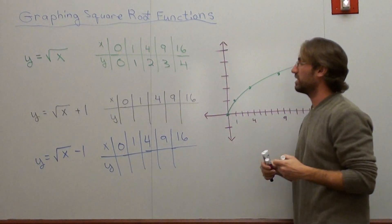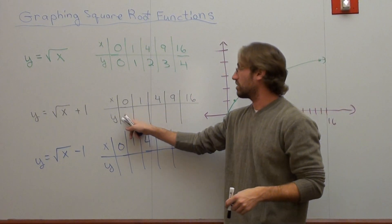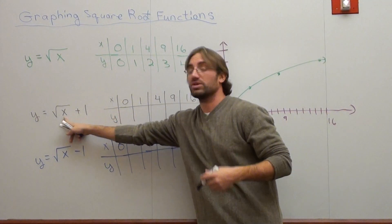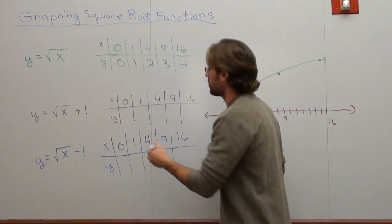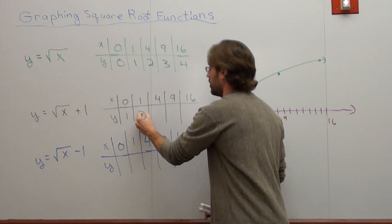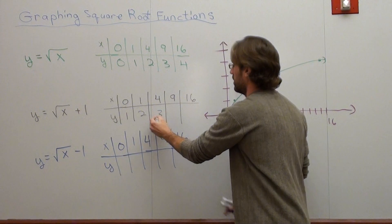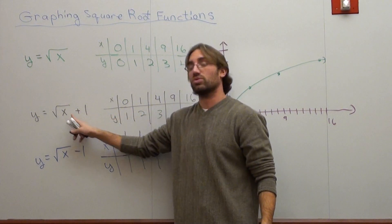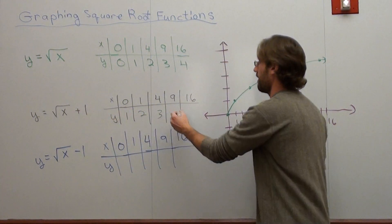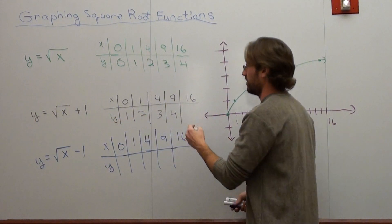It just occurred to me that I needed another number. When I substitute in 0 into this one, I get the square root of 0, which is 0, plus 1. So this one actually starts at 1. This is the square root of 1, which is 1, plus 1 is 2. Square root of 4, which is 2, plus 1 is 3. Square root of 9, which is 3, plus 1, which is 4. Square root of 16, which is 4, plus 1, which is 5.